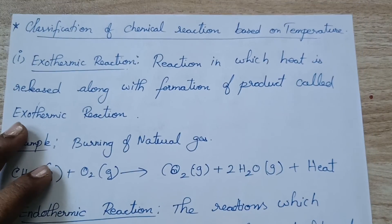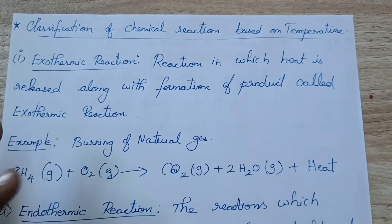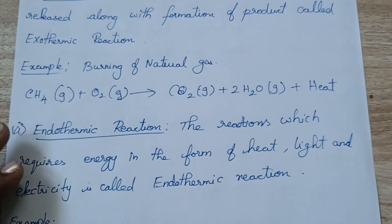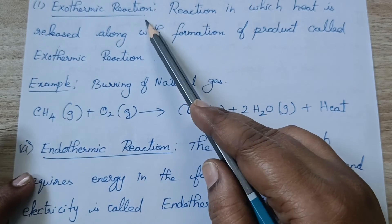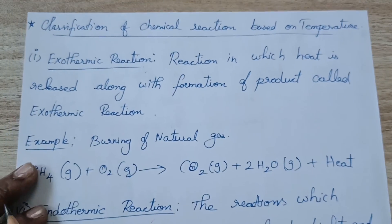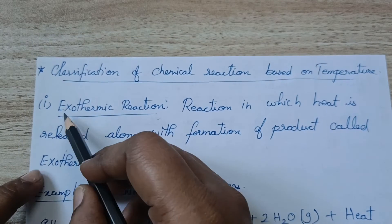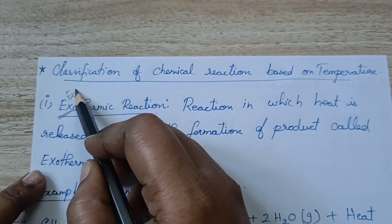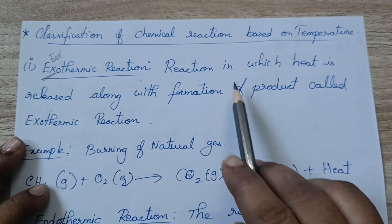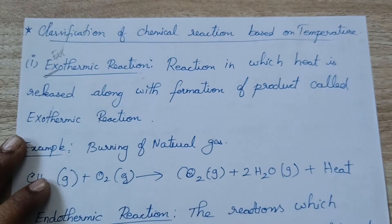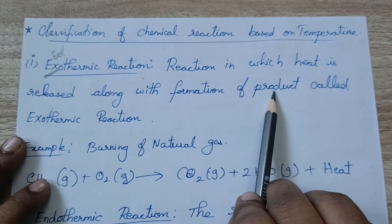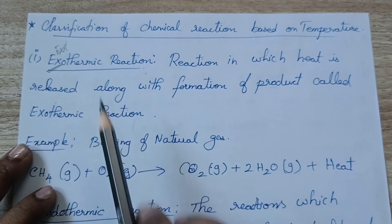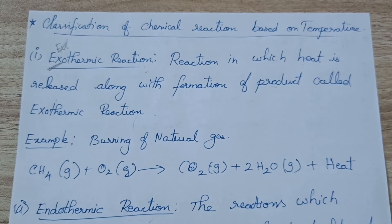Next, we will see the classification of chemical reactions based on temperature. We have two types: exothermic and endothermic. Exo — remember exo means exit, coming out. Exothermic is a reaction in which heat is released along with the formation of the product. Along with the product, if you are getting heat, then this process is called an exothermic reaction.